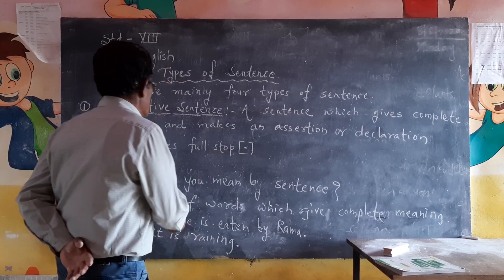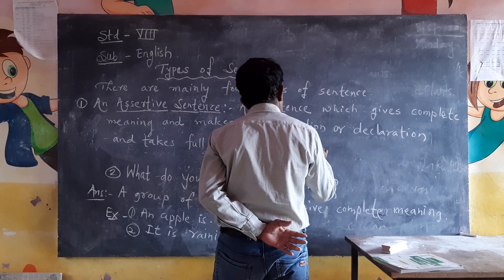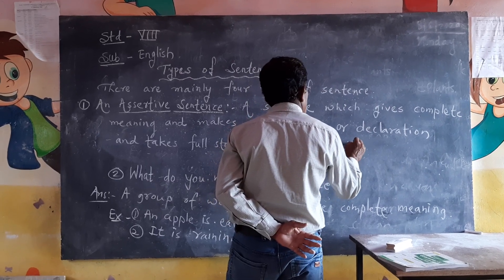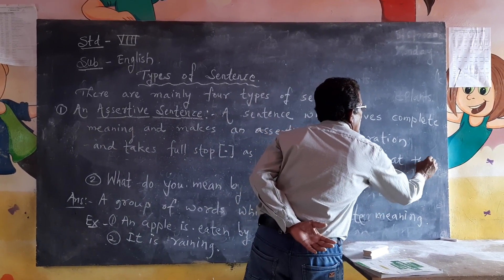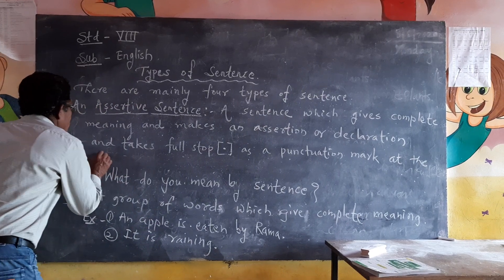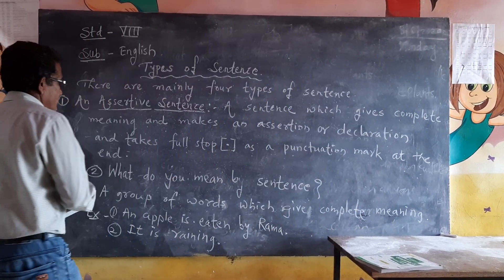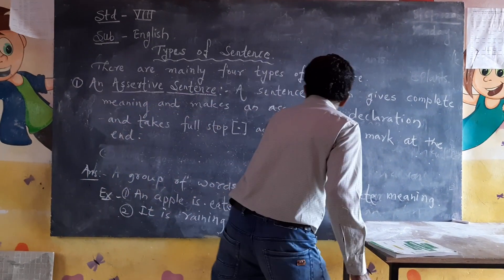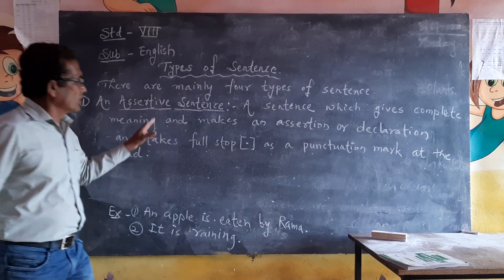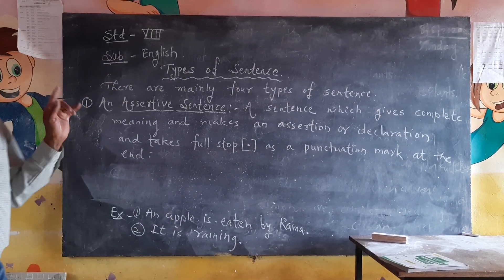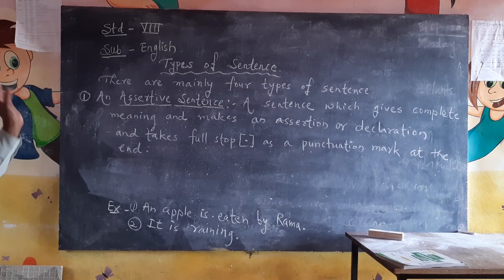An assertive sentence takes a full stop as a punctuation mark at the end. This is called an assertive sentence. An assertive sentence is a sentence which gives complete meaning, makes an assertion or declaration, and takes a full stop as a punctuation mark at the end.